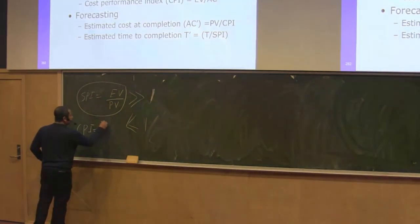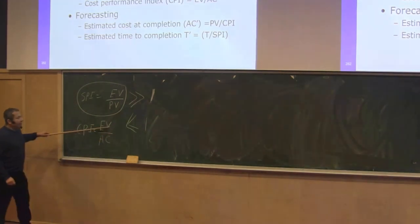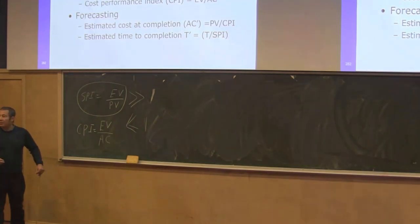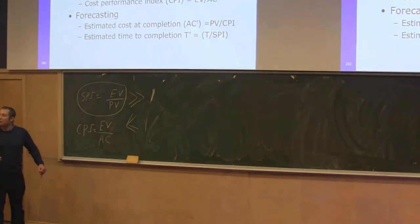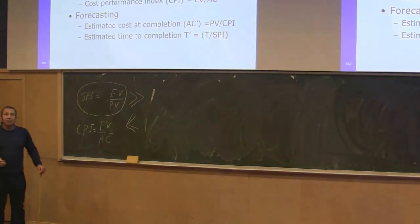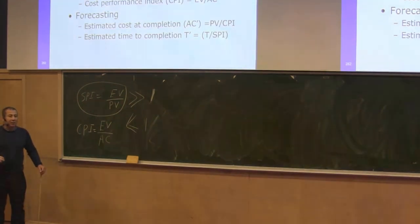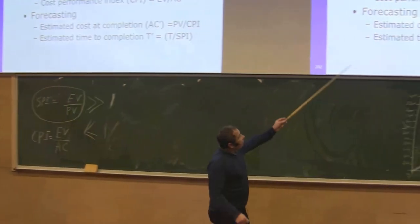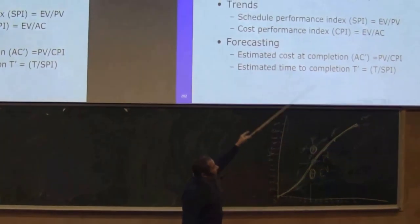CPI is Earned Value divided by Actual Cost. If CPI is greater than one, it means your team is producing more than expected — they are using fewer resources than planned. If it is less than one, it means they are either inexperienced or don't have the necessary skills to produce the required amount of work.